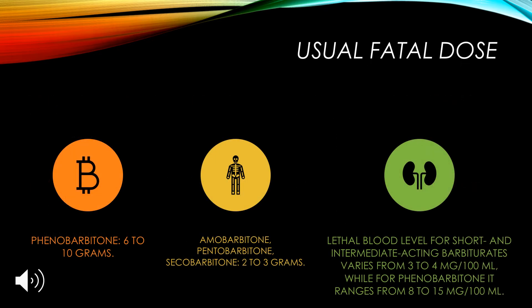Regarding the fatal dose, Phenobarbitone may lead to toxicity at a dose of 6 to 10 grams, while Amobarbitone, Pentobarbitone, and Secobarbitone are fatal at 2 to 3 grams. The lethal blood levels for short-acting and intermediate-acting barbiturates range from 3 to 4 mg per 100 ml, whereas for Phenobarbitone it ranges from 8 to 15 mg per 100 ml, indicating barbiturate poisoning if exceeded.